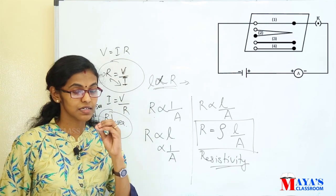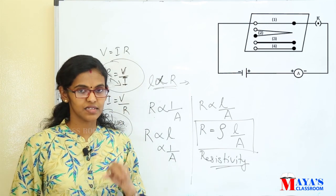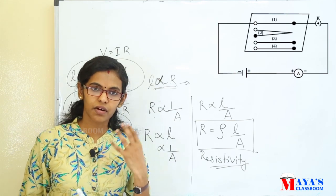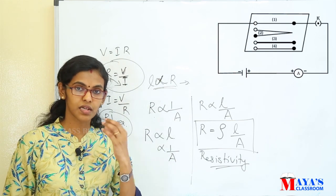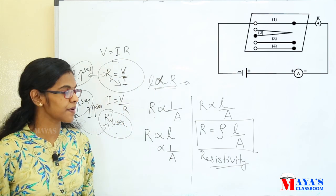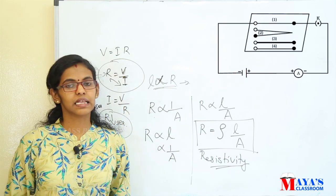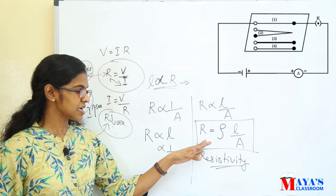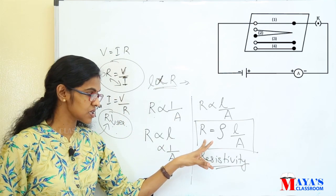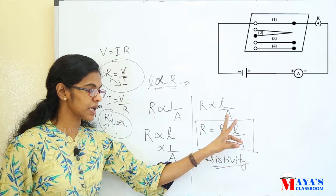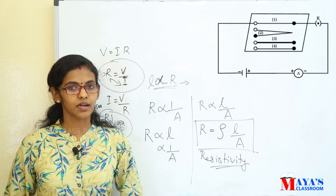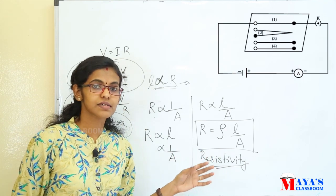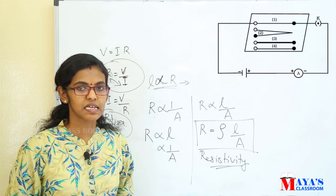These are the main factors that affect the resistance of the conductor: length, area, and the nature of the material. Temperature also affects the resistance of a conductor. Therefore, we write resistance R is equal to rho into L by A, where rho is a constant known as the resistivity of the material of the conductor. Resistivity is a characteristic property of the material.